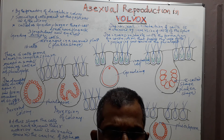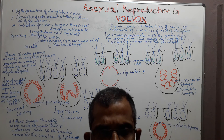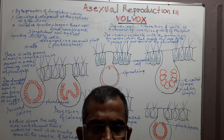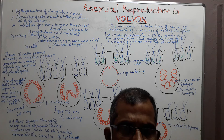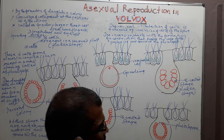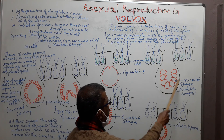Each Gonidium is divided by three longitudinal divisions that result in the formation of eight daughter cells. The eight daughter cells are arranged in the form of a curved plate.